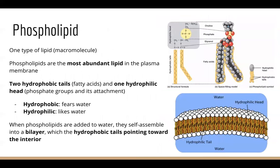What is a phospholipid? A phospholipid is one type of lipid — the most abundant lipid in the plasma membrane. One phospholipid is made up of one head, which is the phosphate group and its attachments, and two tails, which are the two fatty acids. The two tails are hydrophobic, meaning they fear water — they do not like water.